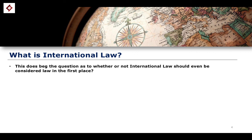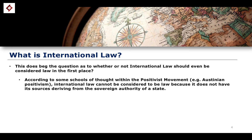This brings into question whether or not international law should even be considered law in the first place. This is a debate had quite often in jurisprudence, and depending on which jurisprudential theory you adopt — or even which type of positivist jurisprudential theory you adopt — we'll actually conclude differently on this question. According to some schools of thought, specifically Austinian positivism, international law cannot be considered law because it does not have its sources deriving from the sovereign authority of a state. Law is derived from the sovereign, according to John Austin. Because there is no sovereign within international law — since it regulates the relationship between sovereigns — it cannot be considered to be law.